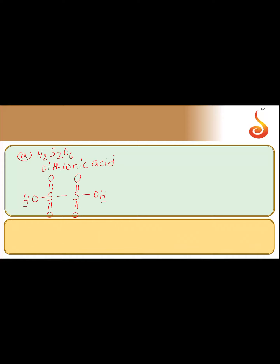Next, option B is H₂S₂O₇. The name of this oxoacid of sulfur is pyrosulfuric acid. Its structure contains an S-O-S linkage.